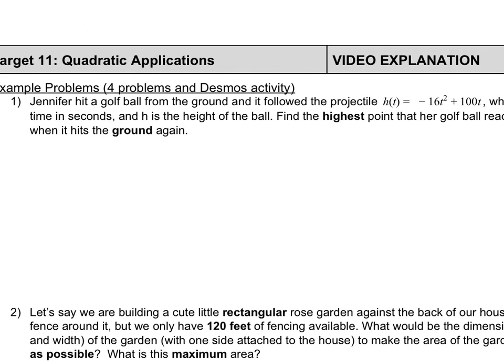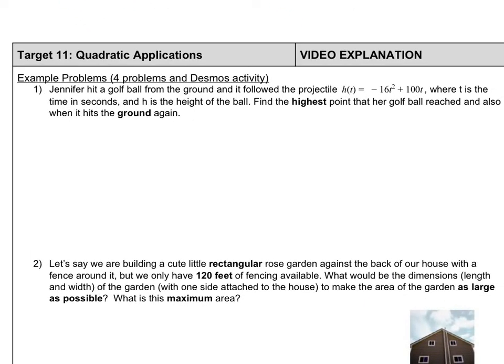So let's see what kind of problems we might see. First one. Jennifer hits a golf ball from the ground and it follows the projectile path h(t) = -16t² + 100t, where t is the time in seconds and h is the height of the ball. We want to find the highest point that her golf ball has reached, and also when does it hit the ground again.